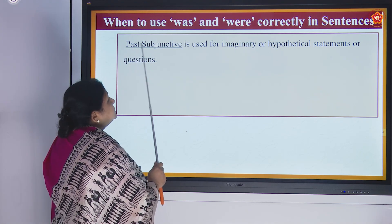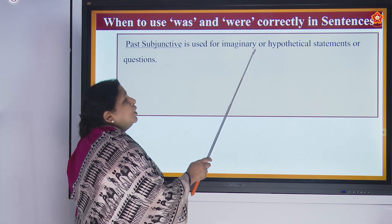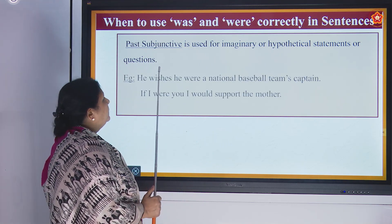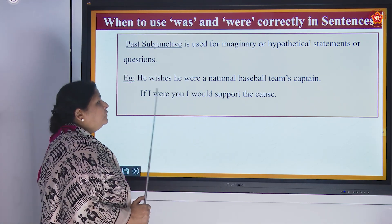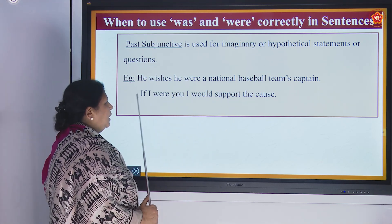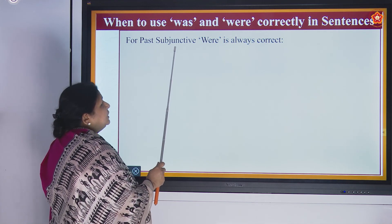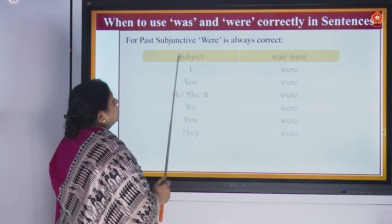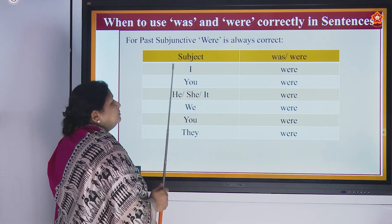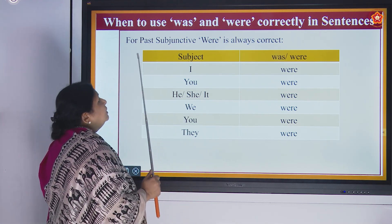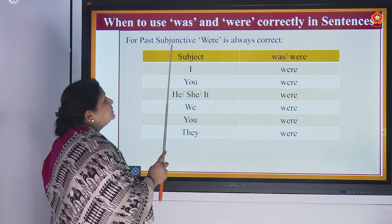Now let us see past subjunctive. Past subjunctive is used for imaginary or hypothetical statements or questions. Example: 'He wishes he were a national baseball team's captain.' 'If I were you, I would support the cause.' For past subjunctive, were is always correct — even when the subject is 'I', it is not was but were. Don't forget to label this as past subjunctive when you write it down.